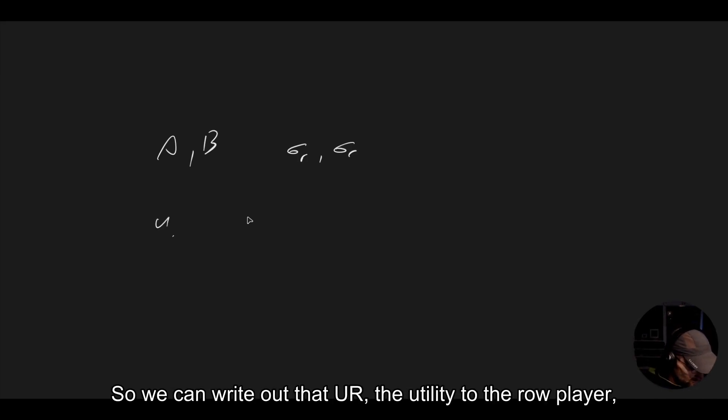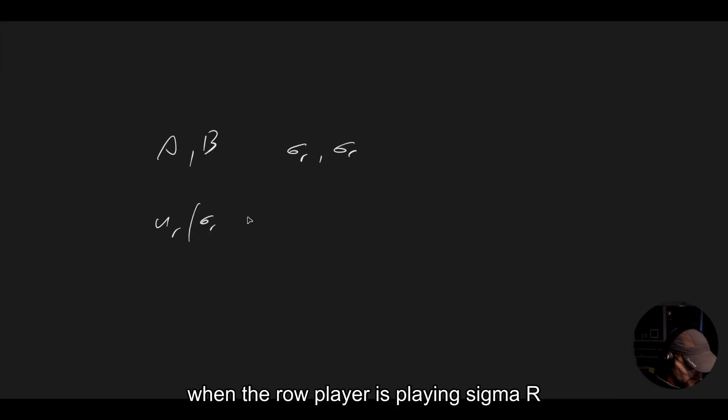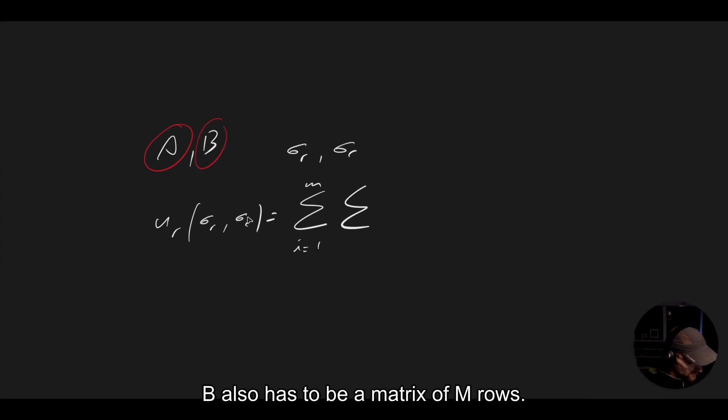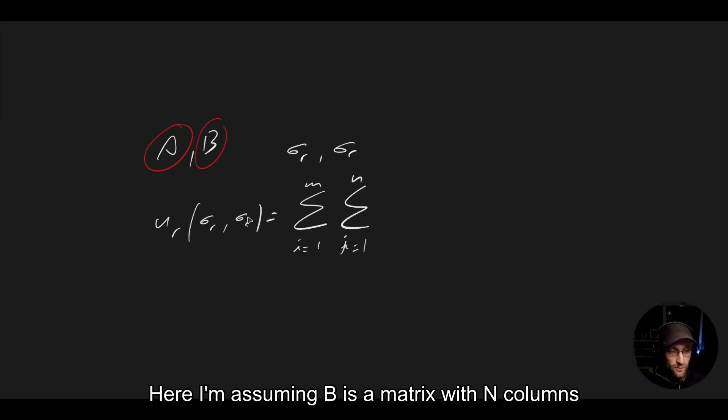So we can write out that U_R, the utility to the row player when the row player is playing sigma R and the column player is playing sigma C, is going to be this double sum. Sum over I equals 1 to M, assuming that A is a matrix with M rows. B also has to be a matrix with M rows. And likewise, this is a matrix with M rows and N columns.